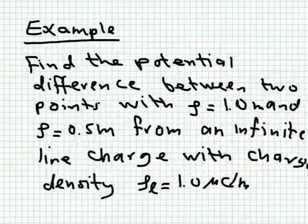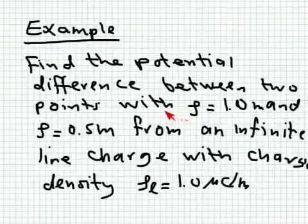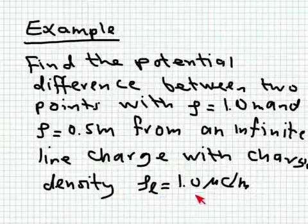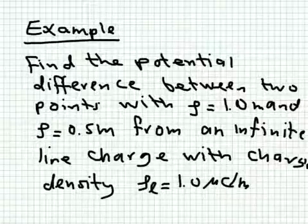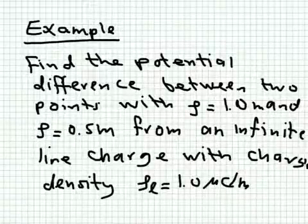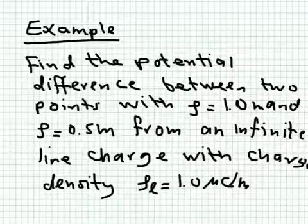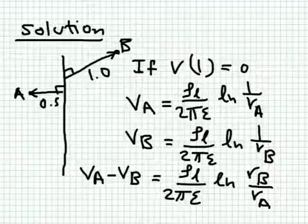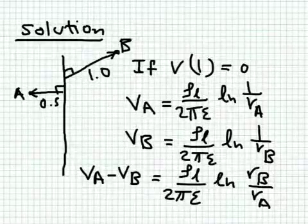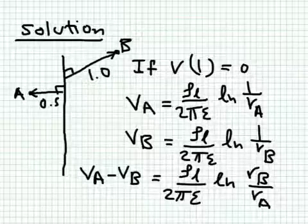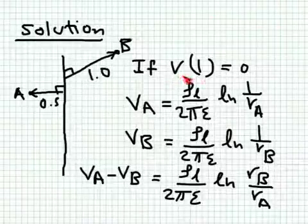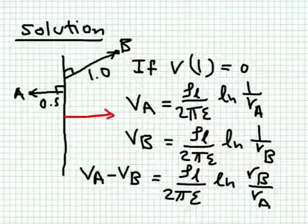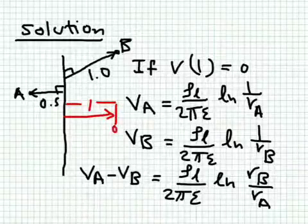For the first example, we find the potential difference between two points at Rho equal to 1 meter and Rho equal to 0.5 meter from an infinite line charge with charge density Rho_L equal to 1 microcoulomb per meter. We have an infinite charge along the z-axis, and two points with normal distances of 1 meter and 0.5 meter from this charge. For infinite linear charges, we cannot take the reference at infinity — a reference at infinity gives an infinite potential. So we take the reference at Rho equal to 1, giving it zero volts.